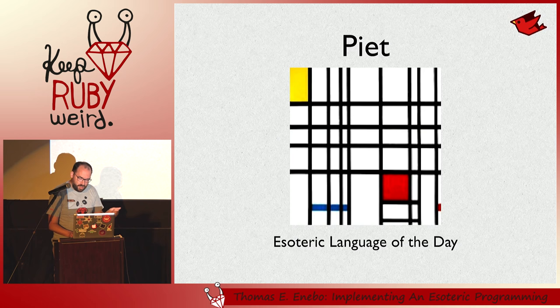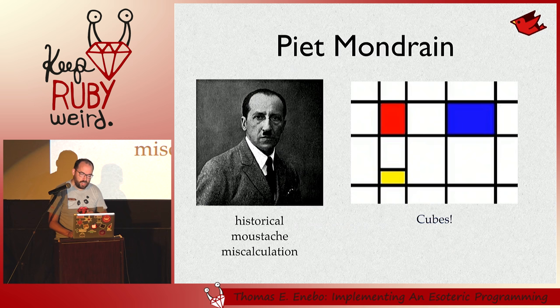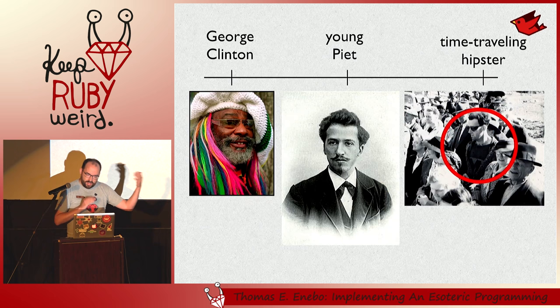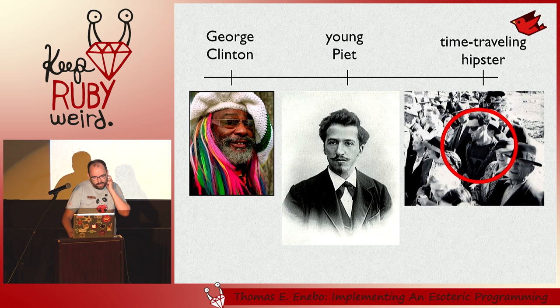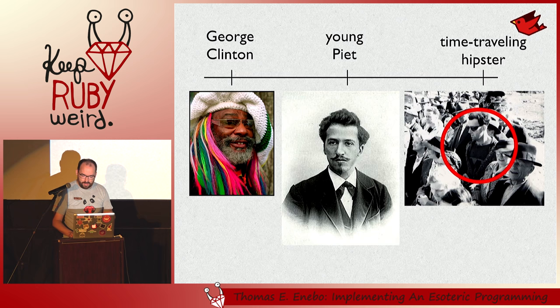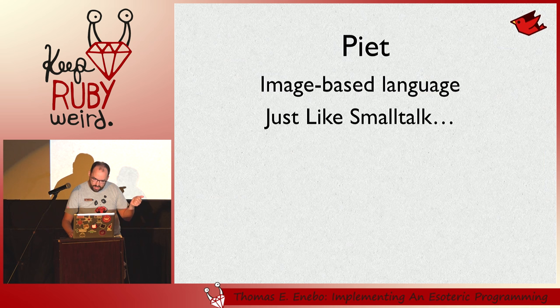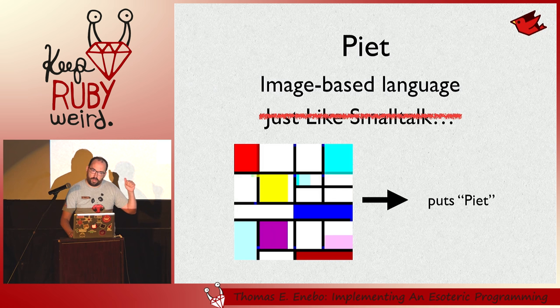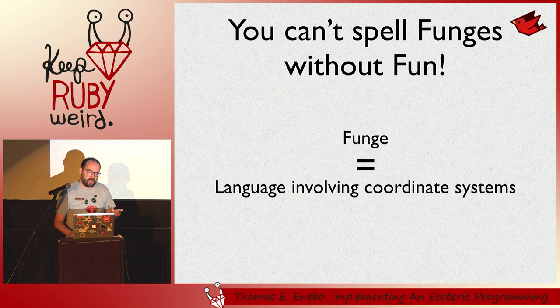I'm going to talk about Piet for the rest of this talk. It's named after Piet Mondrian, who is responsible for the artwork on the right. When he was young, he was somewhere between Clinton and time-traveling hipster. Anyways, the language Piet is image-based. Your source code is literally an image — this is a PNG image. If you go and execute this program, it prints Piet to standard out. It's also known as a funge language, so it works with coordinate systems, which makes sense since the program is an image.